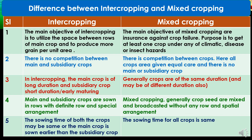Third, in intercropping the main crop is of long duration and the subsidiary crop is of short duration and early maturity, while in mixed cropping generally crops are of the same duration, though they may also be of different durations. Fourth, in intercropping main and subsidiary crops are sown in rows with a definite row and spatial arrangement, while in mixed cropping crop seeds are generally mixed and broadcasted without any row or spatial arrangement.